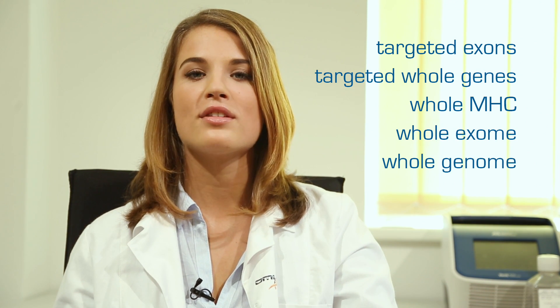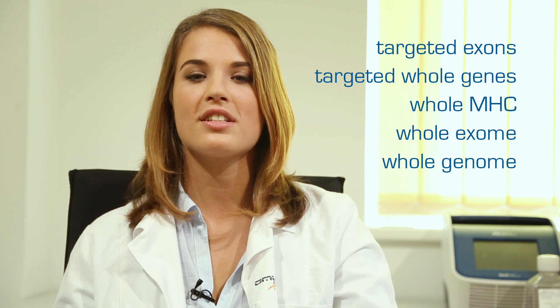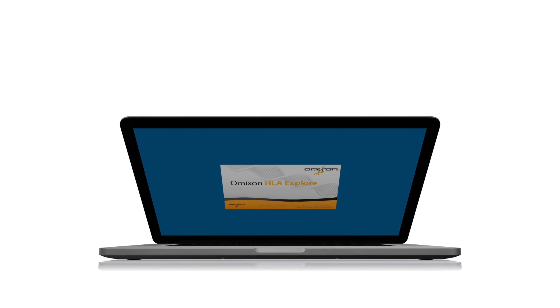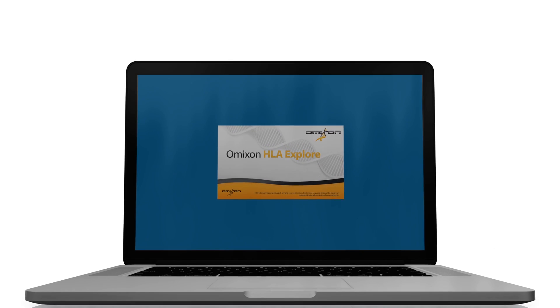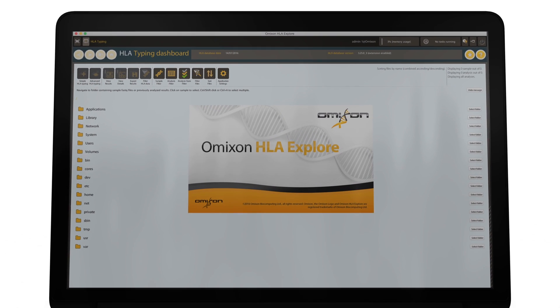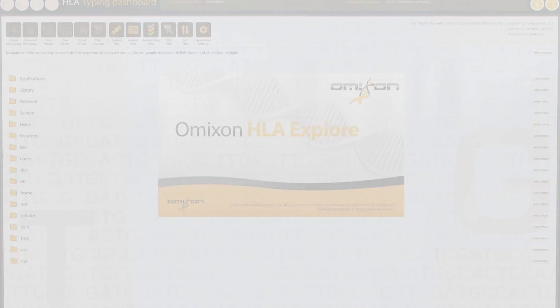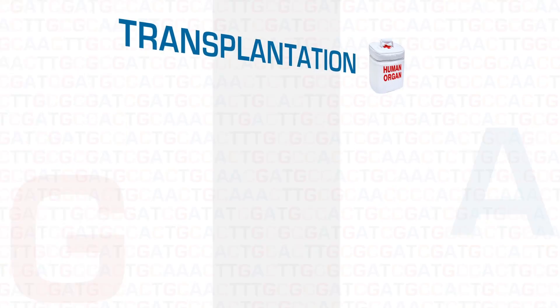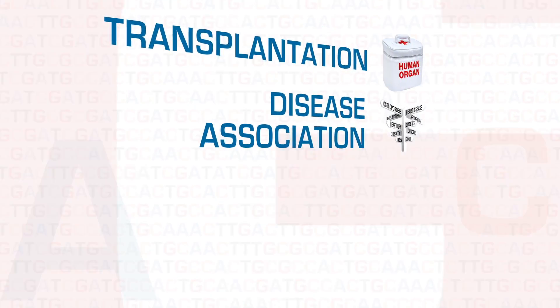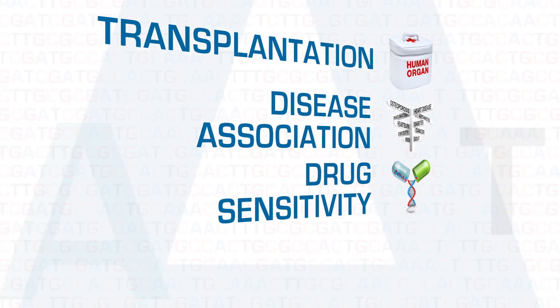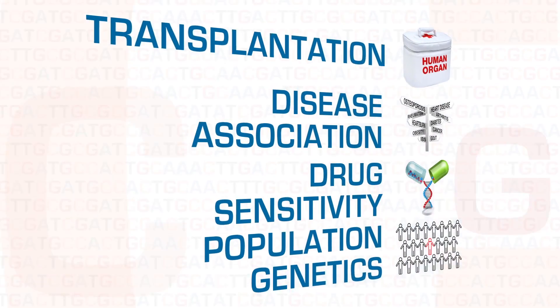It is a high-performance, high-throughput and high-resolution multi-sample software for genotyping analysis, interpretation and reporting. After more than two years of development, Omixon brings you HLA-Explore — powerful HLA genotyping software for applications in transplantation, disease association, drug sensitivity and population genetics.